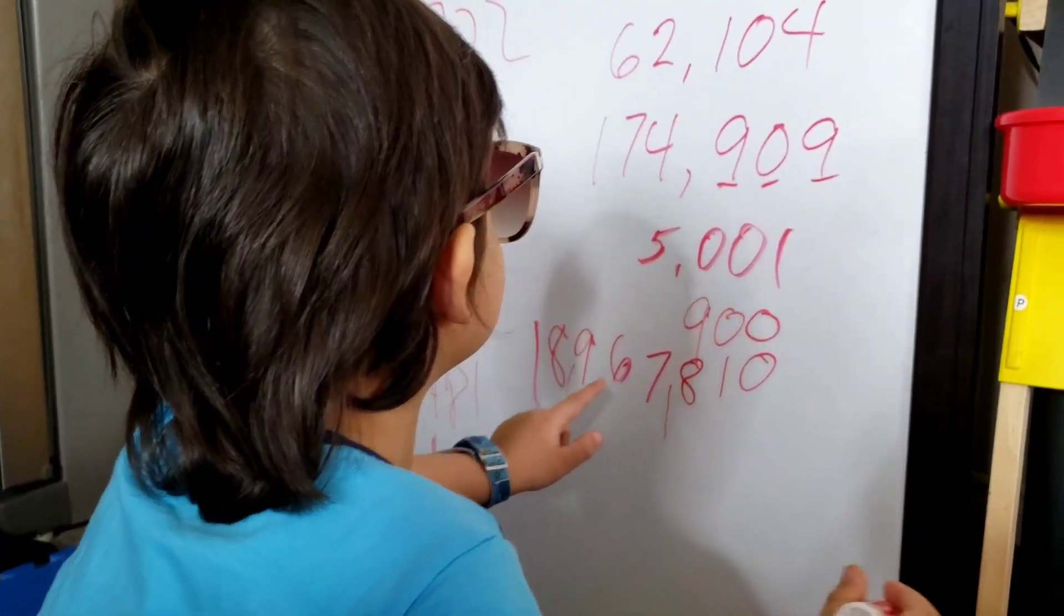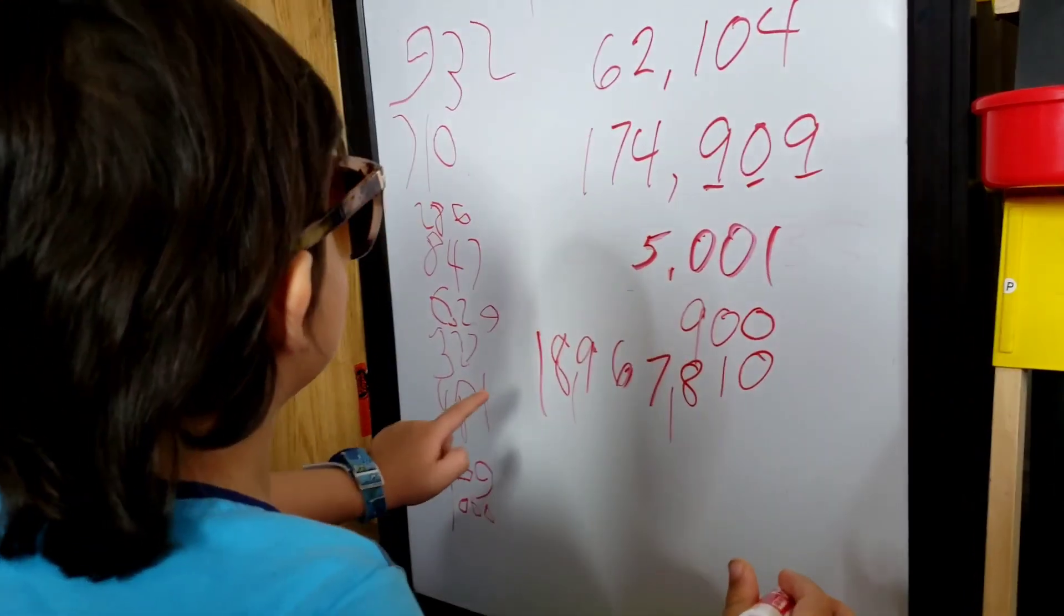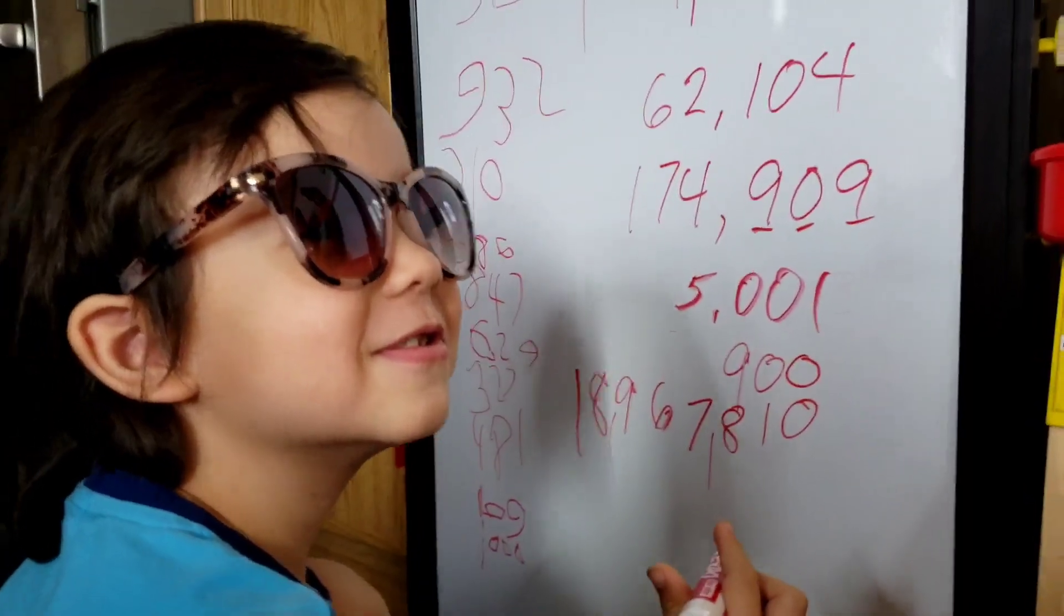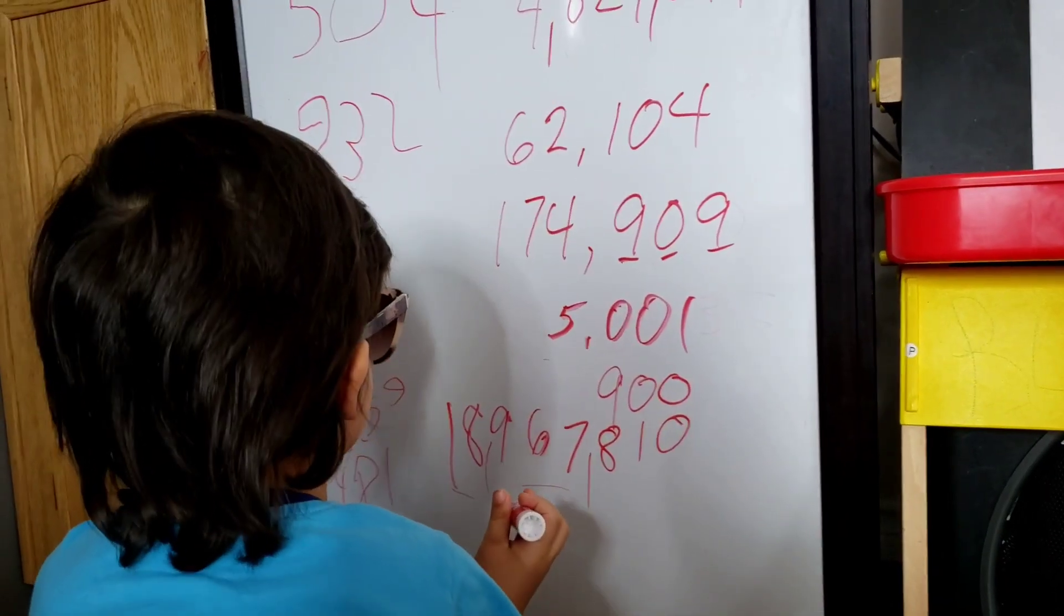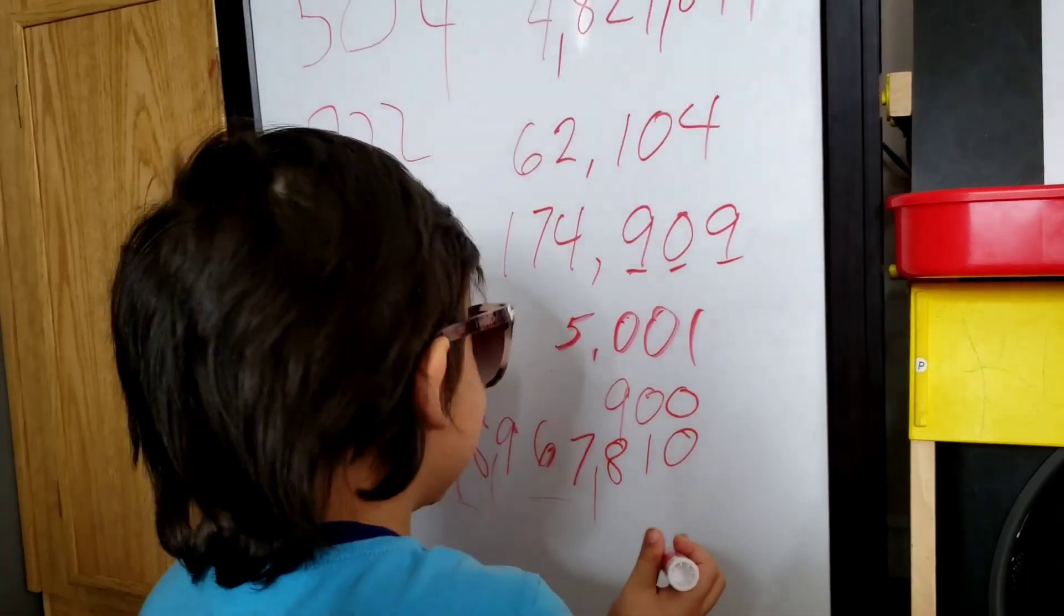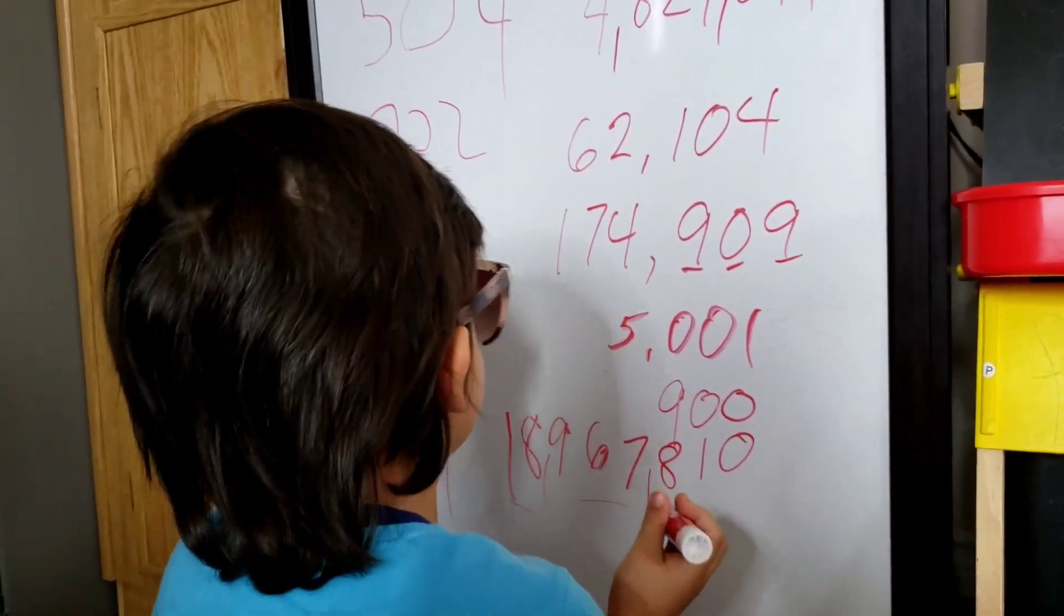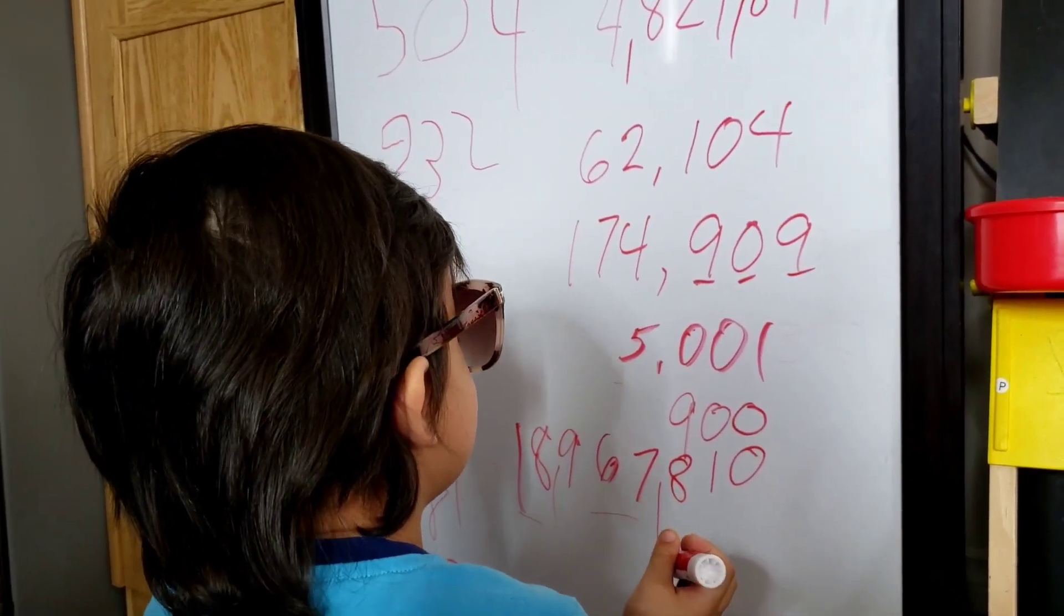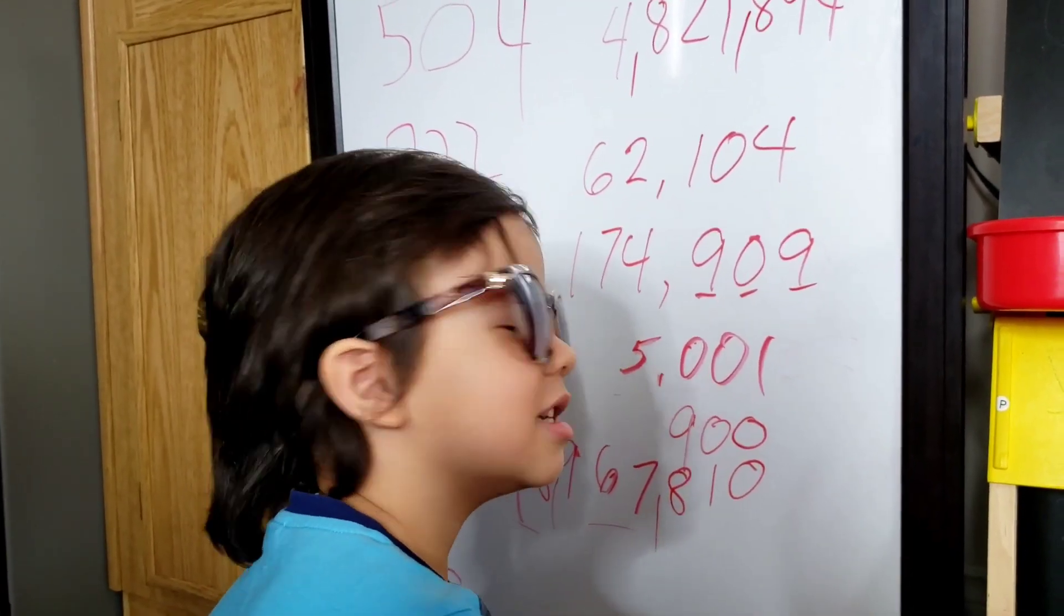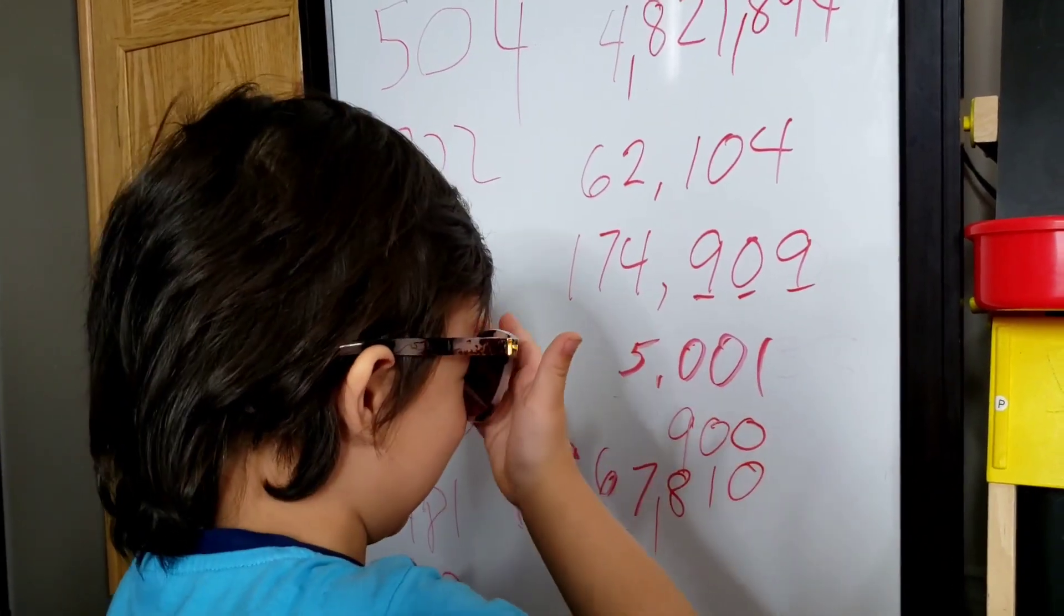Ones, tens, hundreds, thousands, ten thousands, hundred thousands, millions, ten millions. Oh, very good. Can you read it? Eighteen million nine hundred fifty-seven thousand eight hundred ten. Yeah.